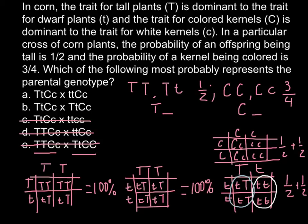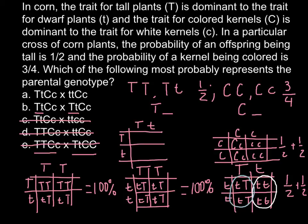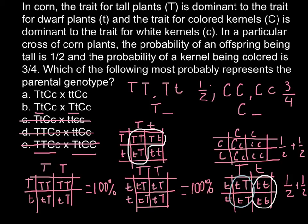With answer B, we have one heterozygous parent and another heterozygous parent. So we cross Tt with Tt. The Punnett square gives TT, Tt, tT, tt — three out of four would be tall plants and one quarter would be small plants. So we have three quarters tall and one quarter short. We can also cross out answer B.